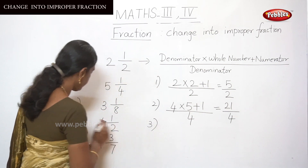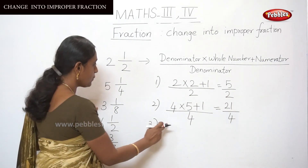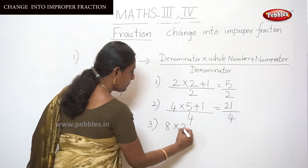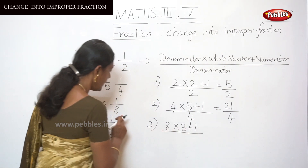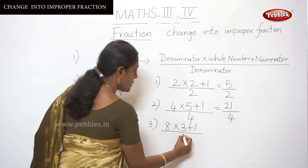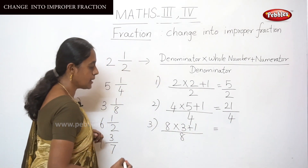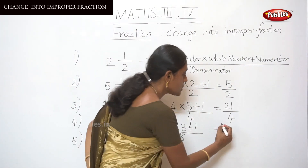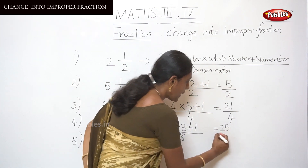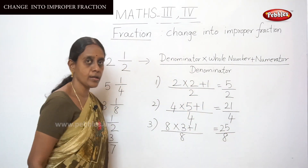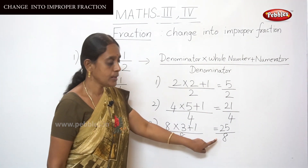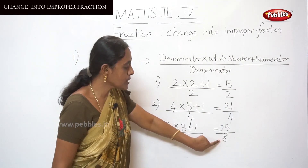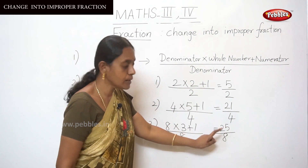Let me do the third sum. For this one, write the denominator first: 8 into the whole number 3, plus 1, divided by the denominator 8. The answer: 8 × 3 = 24, and 24 + 1 = 25, divided by 8. So the answer is 25 by 8. Do you understand? Is it proper or improper? We got an improper fraction because 8 is smaller than the numerator 25.